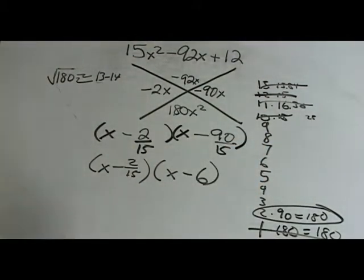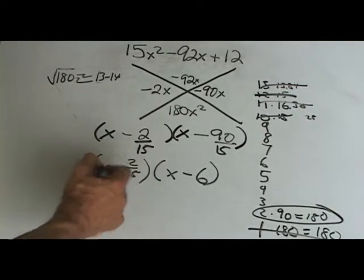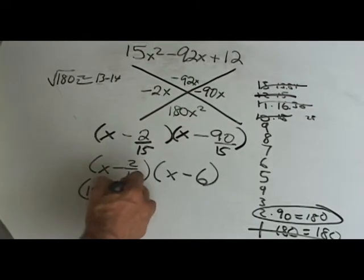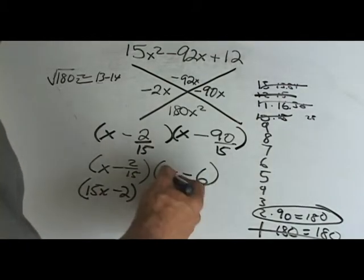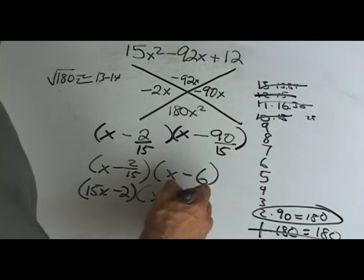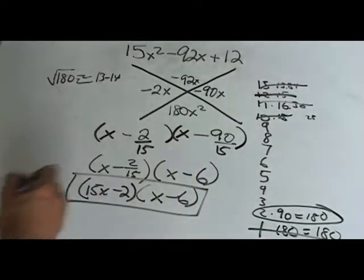And now what do you do? You take the 15 here. Bring it in front. 15x minus 2. This is really 6 divided by 1. So you bring the 1 in front. That doesn't change. And there is your solution.